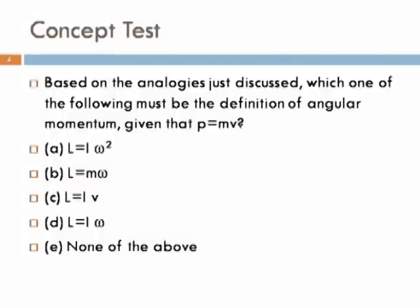All right, so now it's time to do a concept test. Get your mobile phones ready. Based on the analogies just discussed, which one of the following must be the definition of angular momentum, given that the linear momentum P is mass times the velocity? Choice A is L equals I times omega squared. Choice B is L equals M times omega. C is L equals IV. D is L equals I omega. And the last one is none of the above.